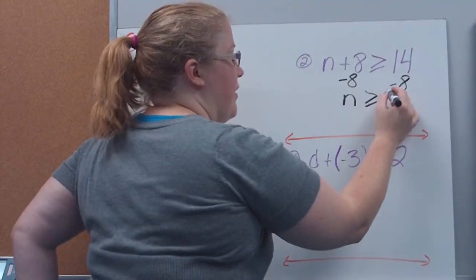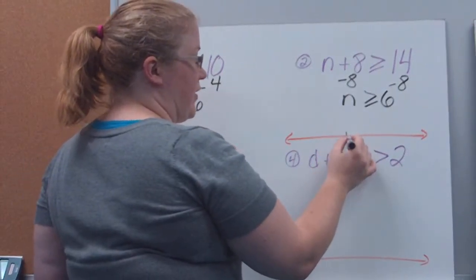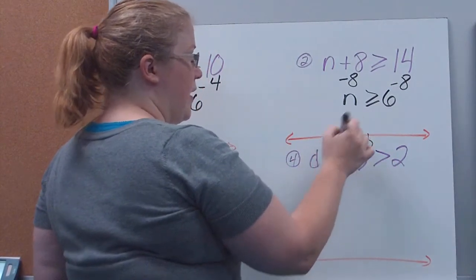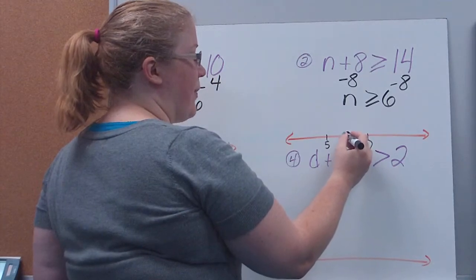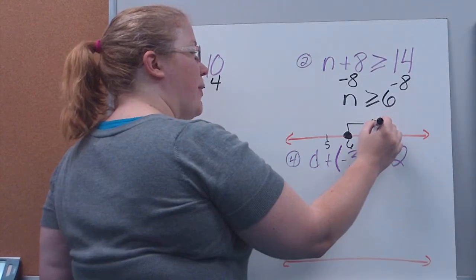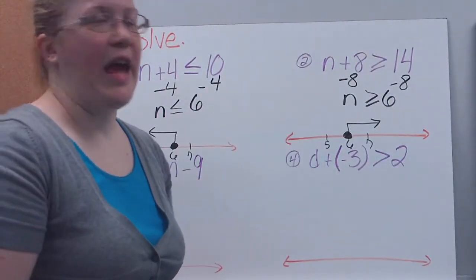So I have n is greater than or equal to 6, which means 6 is the number I want to mark on my number line. It can be equal to, so that means I want to use a closed circle. My variable is on the left, so that means that's showing me the way my arrow should point. The numbers that are greater than 6 are that way.